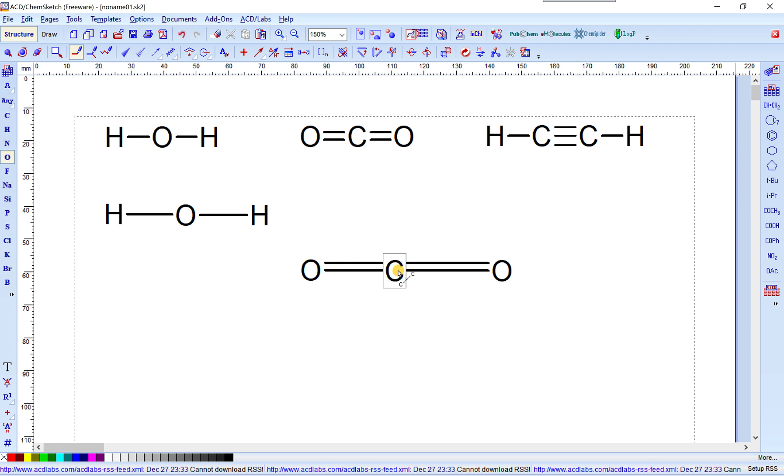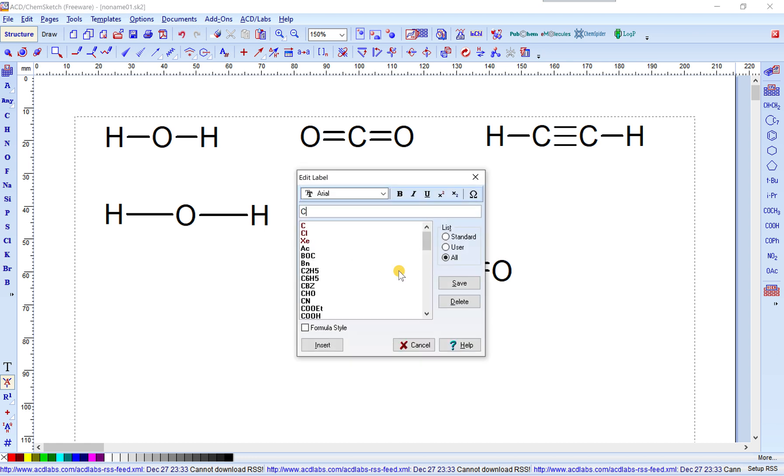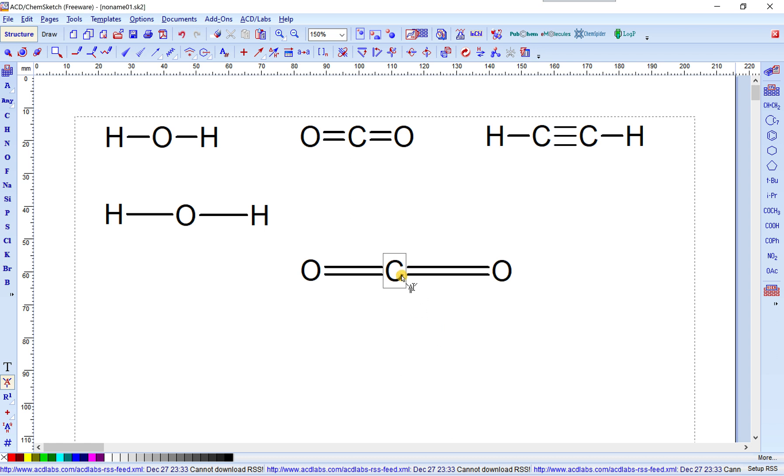Continue to left click to convert the CO single bond to a double one. But now, the Carbon Atom here is hidden. So, we continue to left click on Edit Atom label and move the mouse pointer to the hidden Carbon Atom. Left click on it and type C. Insert. Now, we have a CO2 molecule.